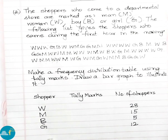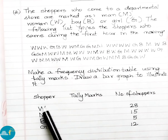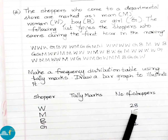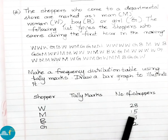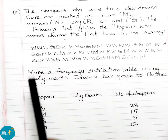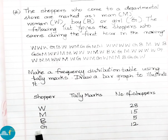In the shoppers column we have W (woman), M (man), B (boy), and G (girl). The number of shoppers: woman = 28, man = 15, boy = 5, and girl = 12.